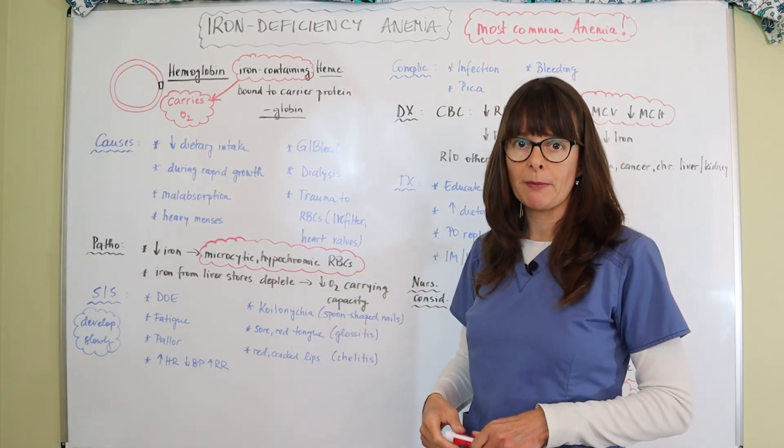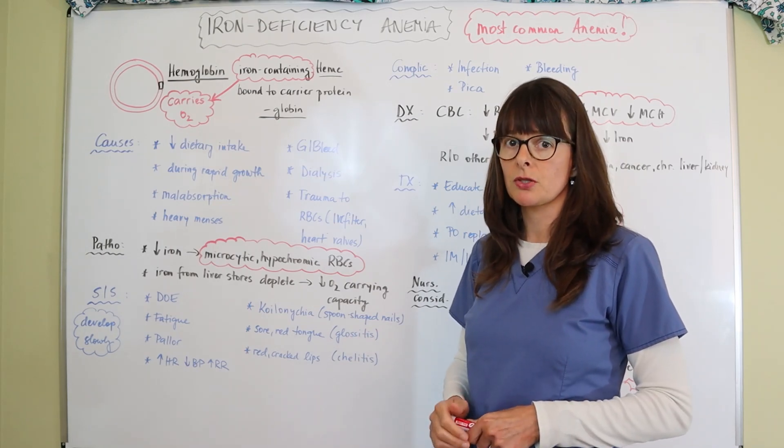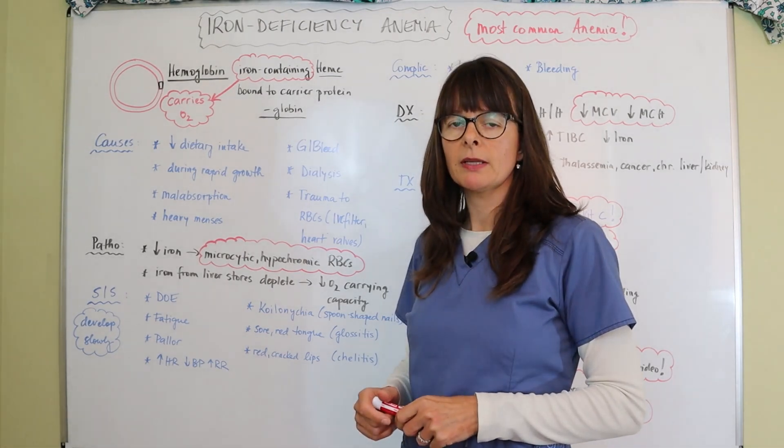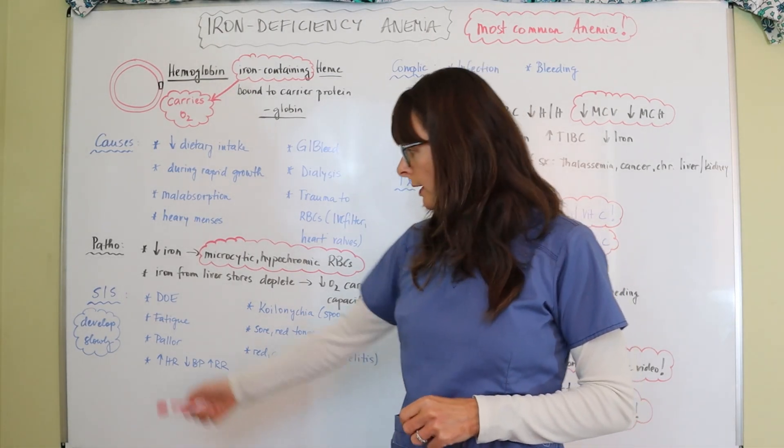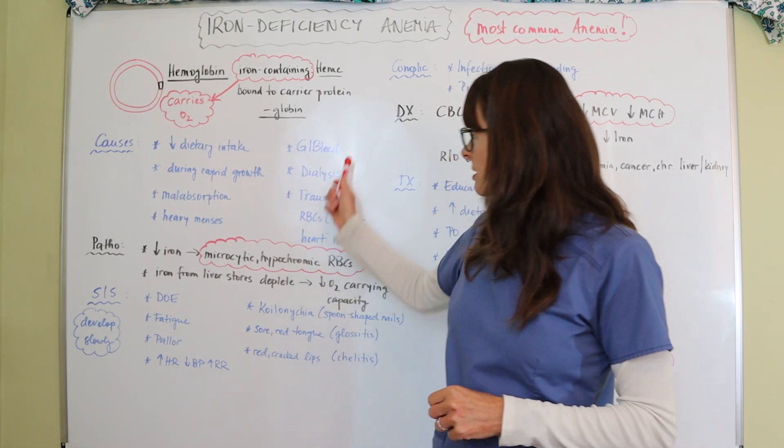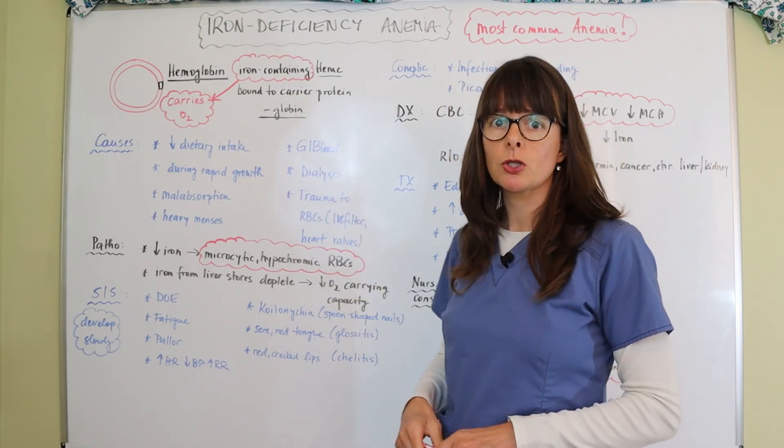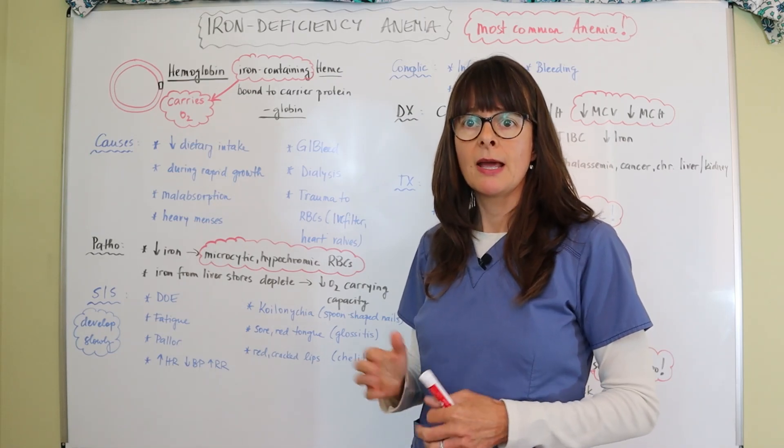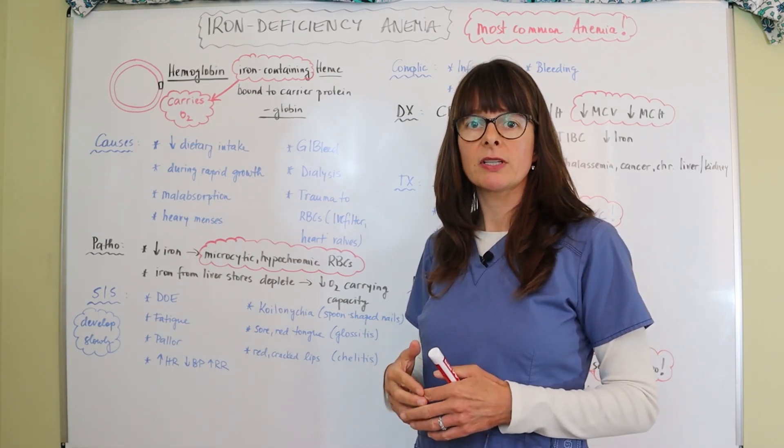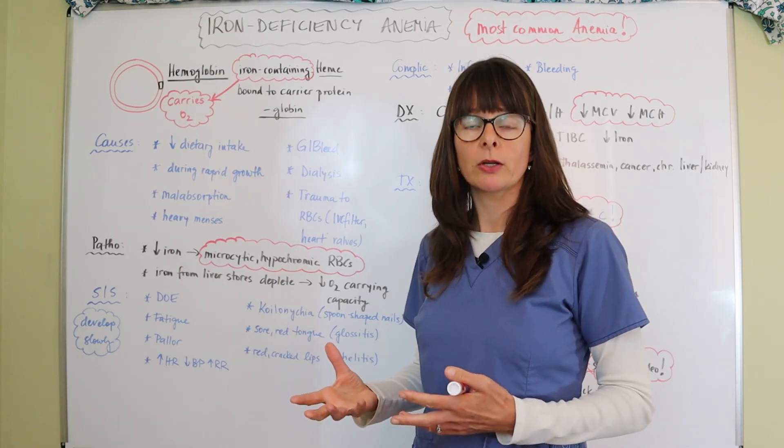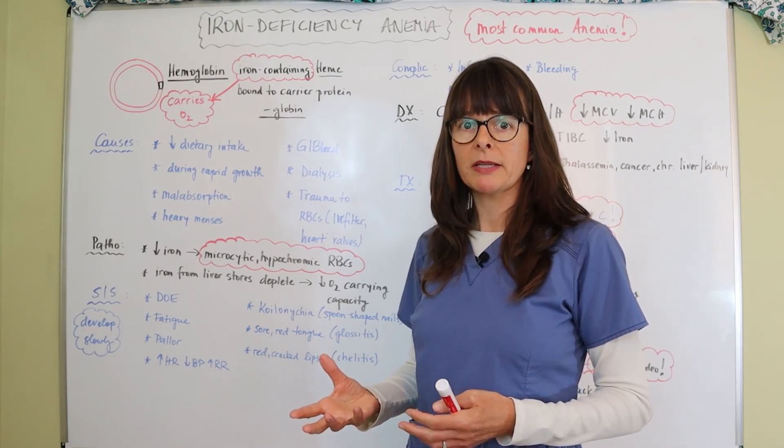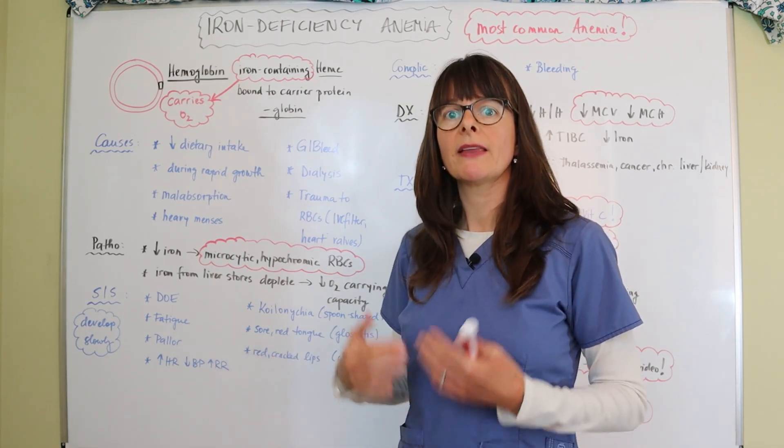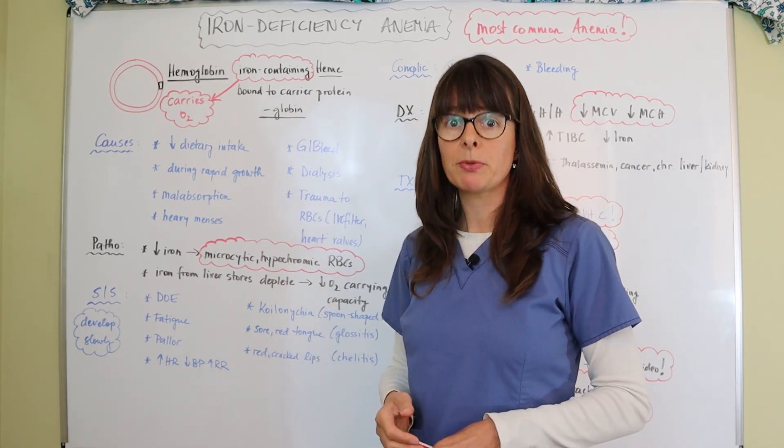Signs and symptoms for iron deficiency anemia might develop very slowly because think about this example I gave with the GI bleed, this is a very slow continuous leak that occurs over several months and the patient initially might not have any symptoms because their body is trying to compensate for the loss of iron and blood cells, but then eventually once it gets to a certain point they start having symptoms and they might be pretty significant.